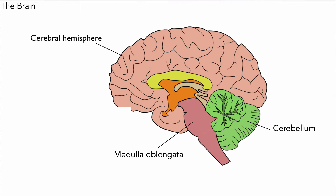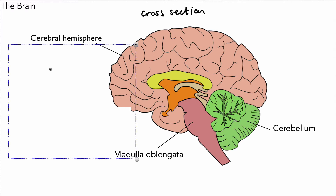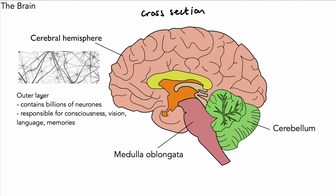Hello and welcome. Today we're looking at the brain for GCSE science. What we have on the screen is what's called a cross section of the brain showing three very important parts. A cross section is just the brain as it might look if it were sliced in half. The first part we're going to look at is the cerebral cortex. This is the outer layer and the wrinkled part you would probably think of if you imagined or saw a picture of the brain in a book.